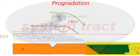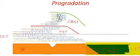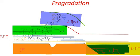Lowstand system tract, transgressive system tract, highstand system tract, and shelf-margin system tract form during progradation.